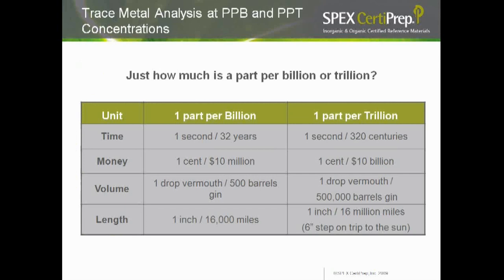Just how much is a part per billion or a trillion? These terms — parts per billion and parts per trillion — are abstract terms. We can understand this better if I express them in real units that are more familiar to us. Take, for instance, the unit of time: one second in 32 years is one part per billion; one second in 320 centuries is one part per trillion. In terms of money: one cent in 10 million dollars is one part per billion; one cent in 10 billion dollars is one part per trillion.